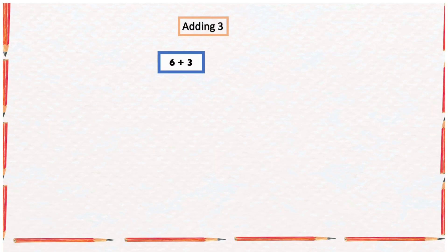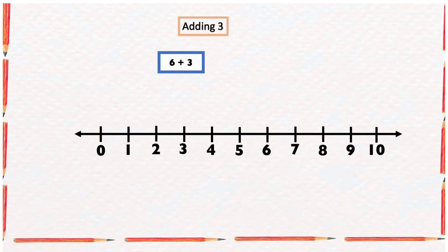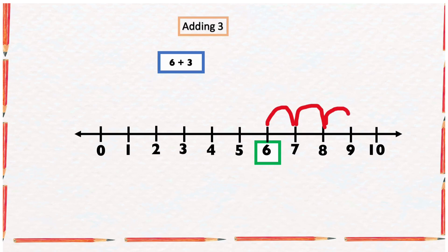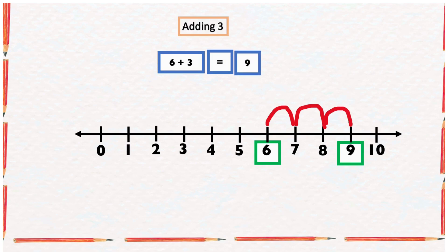Let's get started. Find the sum of six and three with the help of a number line. We will start from the bigger number, which is six, and count three numbers forward: one, two, three. This ended at number nine, so the sum of six and three is equal to nine.